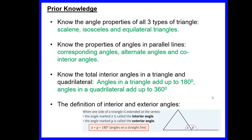Some prior knowledge that you need before starting this lesson: you should know the angle properties of the three different types of triangles — the scalene, isosceles and equilateral triangle. You should know the properties of angles in parallel lines: corresponding angles, alternate angles and co-interior angles. You should know the total interior angles of a triangle and quadrilateral — angles in a triangle add up to 180 degrees, angles in a quadrilateral add up to 360. And you should know the definition of an interior and exterior angle. If there are any you're not great on, you might want to pause and look at a video on those particular topics.